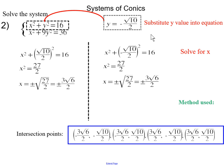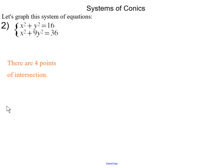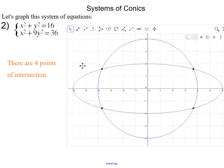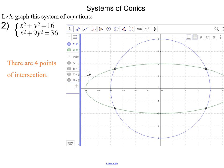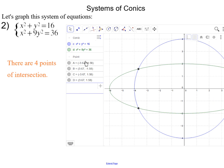The method we used in this problem was elimination — we eliminated one variable to solve for the other. Looking at the graph again to double-check, we have our four points of intersection. If we were to convert our solved points to decimals rounded to the nearest hundredth, those values would match the graph exactly.